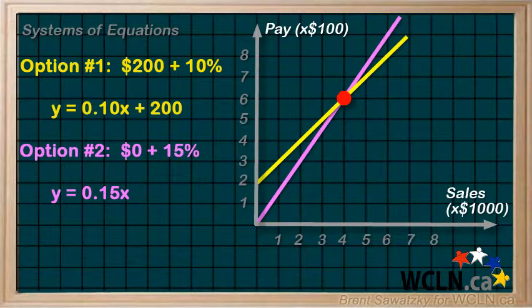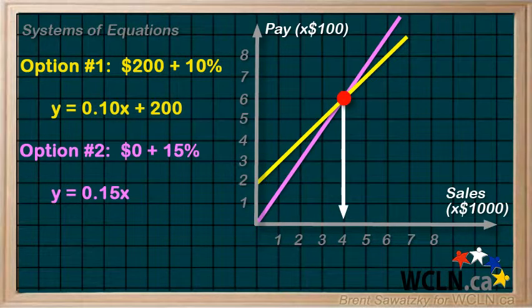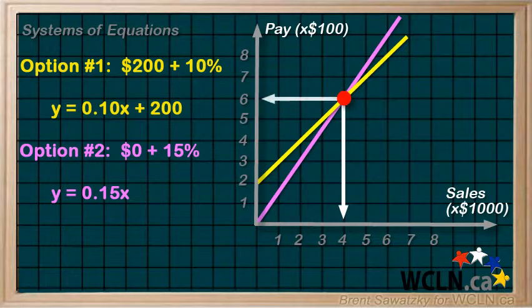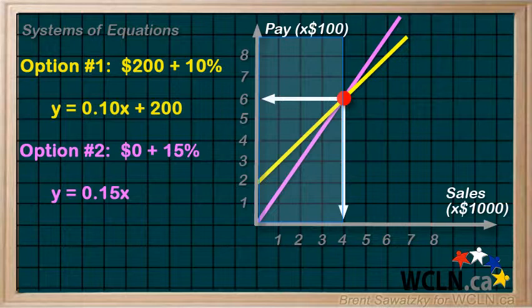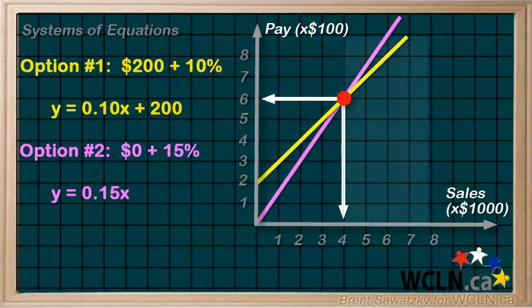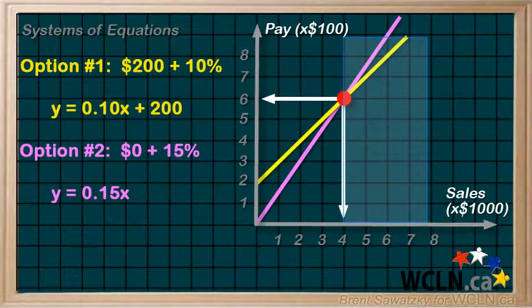That is, whether we chose option 1 or option 2, if we have sales of $4,000, we would be paid $600. With sales below this solution, we would make more with option 1. With sales above this point, option 2 is a better bet.